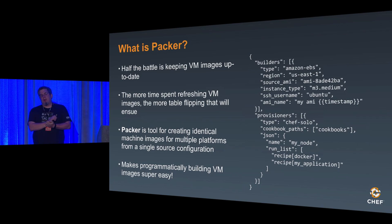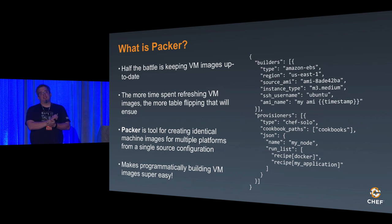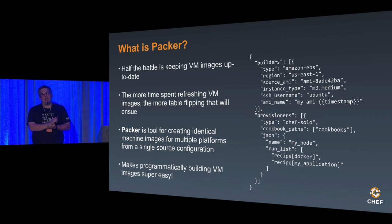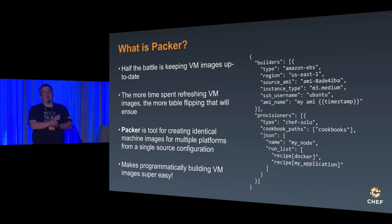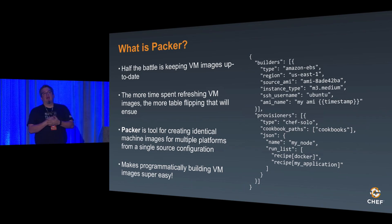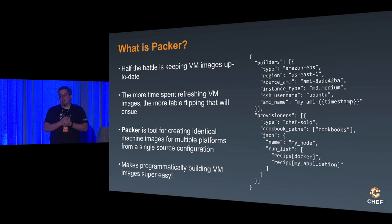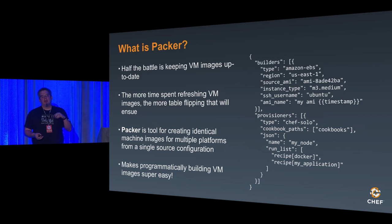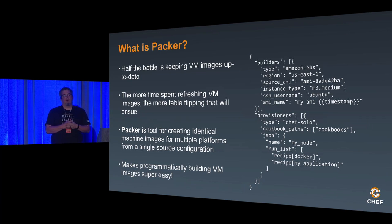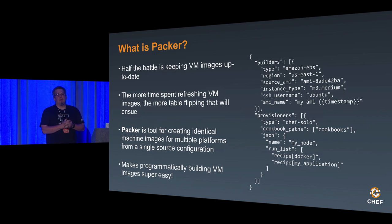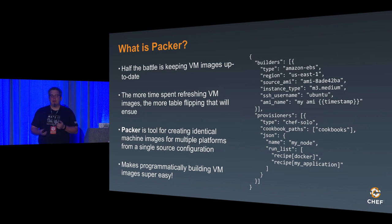You can also programmatically interface with Packer. Since it's all JSON, you could generate JSON objects, drop them into a CI system, and have Packer build from a base template and do any modifications. You could use this same template and switch out the Chef run list for different applications to build out an image bakery for whatever your virtualization platform is.